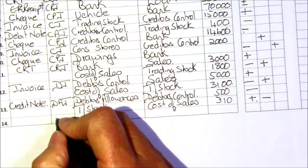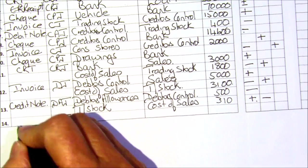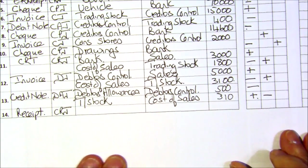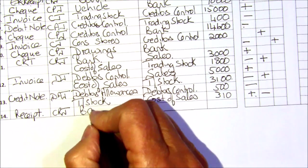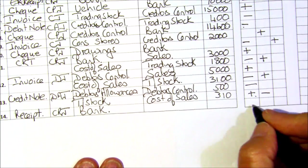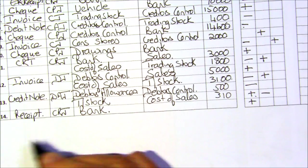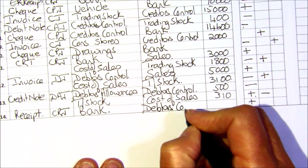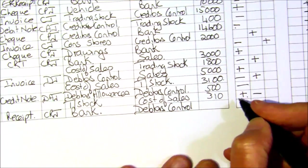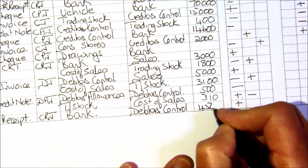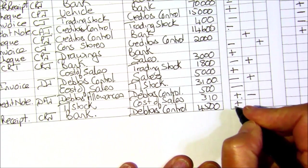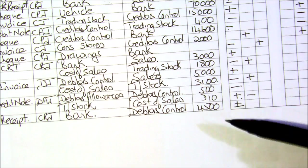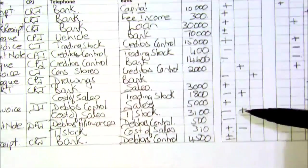Lastly, Nokia paid the account — we're receiving money, so it's the cash receipts journal. We would have given a receipt, or it could have been a bank statement if it was an EFT. We're receiving money, so our bank is increasing. We're getting it from our debtors — so debtors' control. The debtor is also an asset, so your debtor is going down. One asset is increasing and one asset is decreasing.